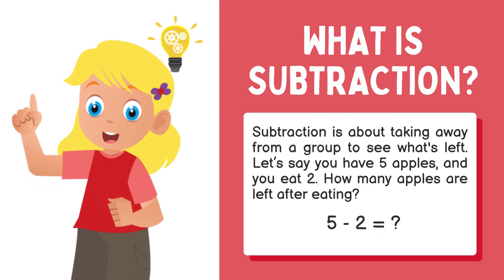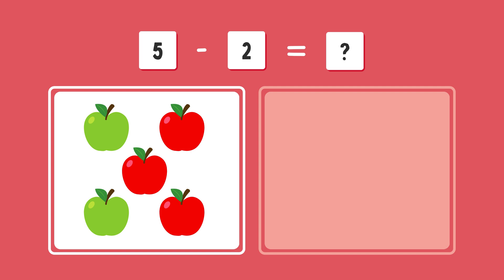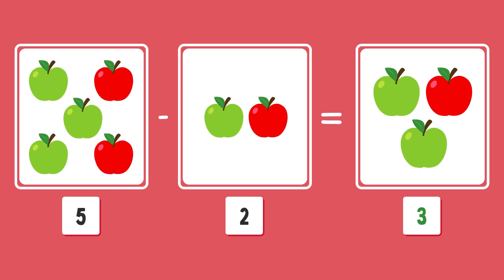Subtraction is about taking away from a group to see what's left. Let's say you have five apples and you eat two. How many apples are left after eating? What is five minus two? Correct answer is three.